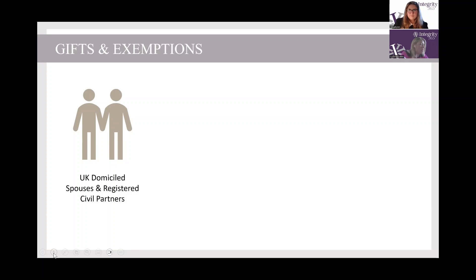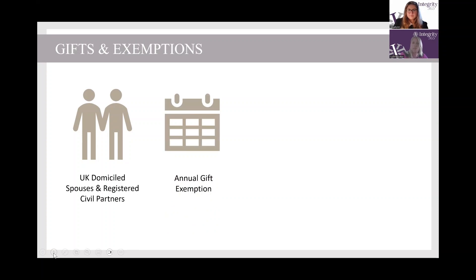My bit will be on gifts and exemptions. If you pass money on to a UK-domiciled spouse or registered civil partner — if you were to pass away and leave everything to your UK-domiciled spouse or civil partner — that would be what's called exempt, so there wouldn't be any inheritance tax liability at that time. You've also got an annual gift exemption, which is currently £3,000. You are able to go back one year, so if you didn't use last year's, you can actually gift up to £6,000 — but you can only go back one year.